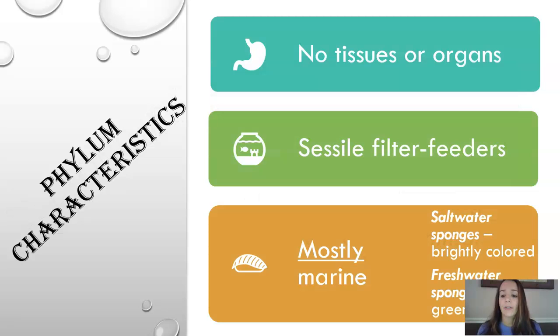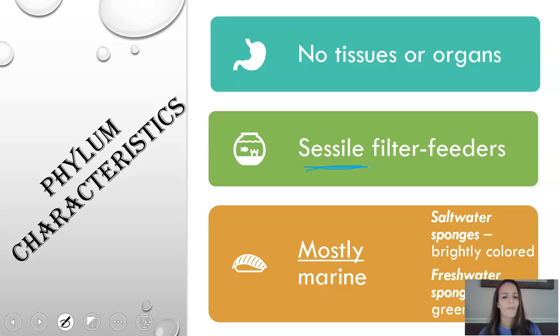A little bit about the characteristics of the phylum: sponges do not have any tissues or organs, and they are sessile, which means they simply don't move. They move when they're juvenile, but as adults they don't move. They filter feed and are mostly marine — saltwater sponges — which are very brightly colored. There are, however, some freshwater sponges, and these are typically a green color.